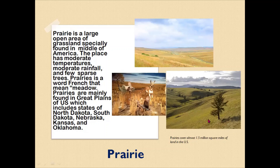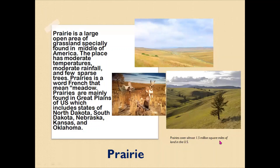Prairie is a French word that means meadow. Prairies are mainly found in the Great Plains of the U.S., which includes the states of North Dakota, South Dakota, Kansas, and Oklahoma. Prairies cover almost 1.5 million square miles of land in the USA. That is how much area has been covered by the Prairie.